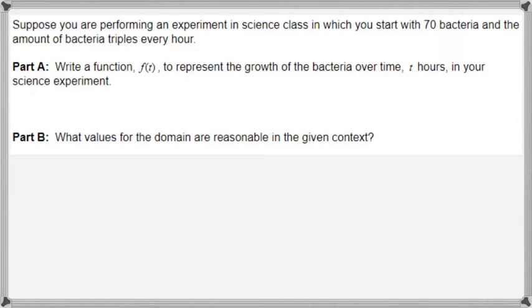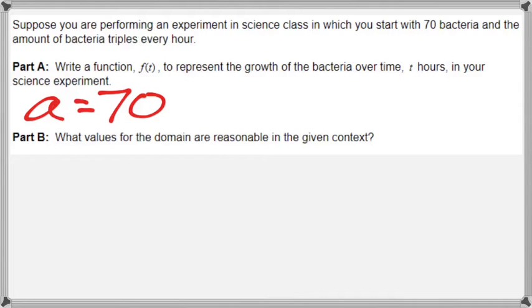Suppose you are performing an experiment in science class in which you start with 70 bacteria, and the amount of bacteria triples every hour. Write a function f of t to represent the growth of the bacteria over time, t hours in your science experiment. Our value of a — the initial value — is 70 bacteria. It says you start with 70 bacteria, so a is 70.